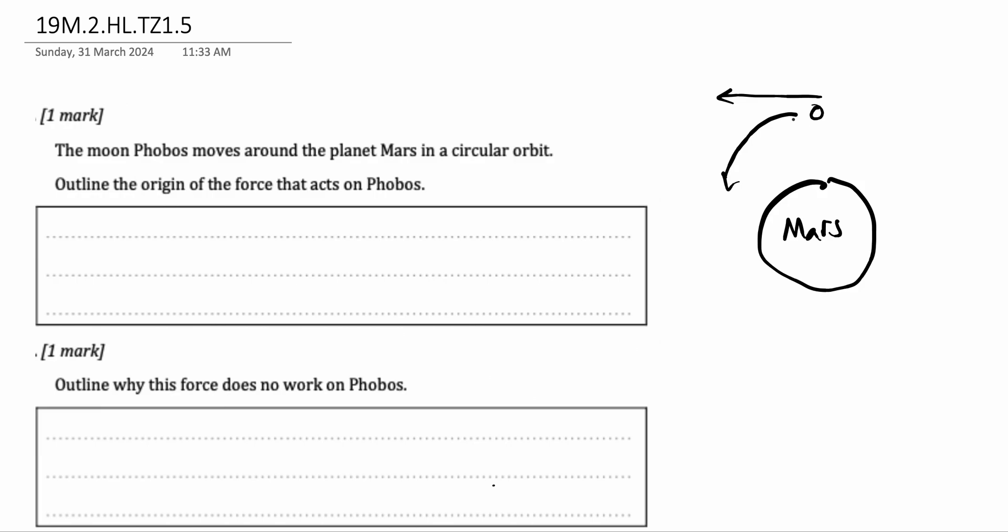The centripetal force causes the moon to go in circles around Mars, keep it in orbit around Mars. And this centripetal force is attractive and is called the gravitational pull of Mars or the gravitational force of Mars. So that's your answer: the gravitational force due to Mars. That is the only reason why this moon Phobos is not moving in a straight line.